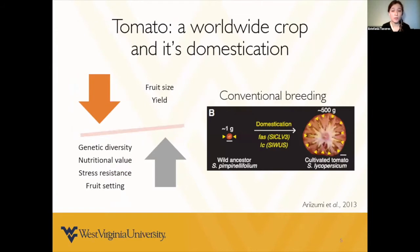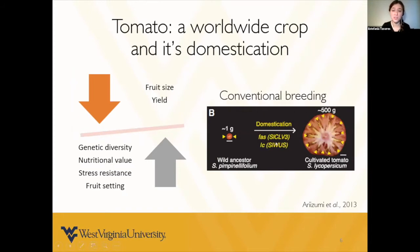Tomato, like many other crops around the world, has suffered from the domestication syndrome, which decreases the genetic diversity of this plant and also the nutritional values, stress resistance, and fruit setting. As a result, we increased fruit size and yield through conventional breeding procedures. For example, the wild ancestor of the tomato, Solanum pimpinellifolium, evolved by single mutations in two genes to the Solanum lycopersicum that we now use as the cultivated tomato, demonstrating the dramatic change in fruit size.